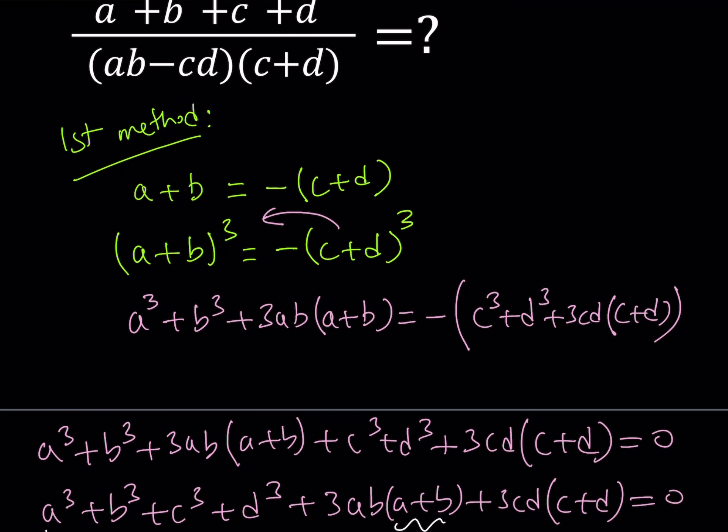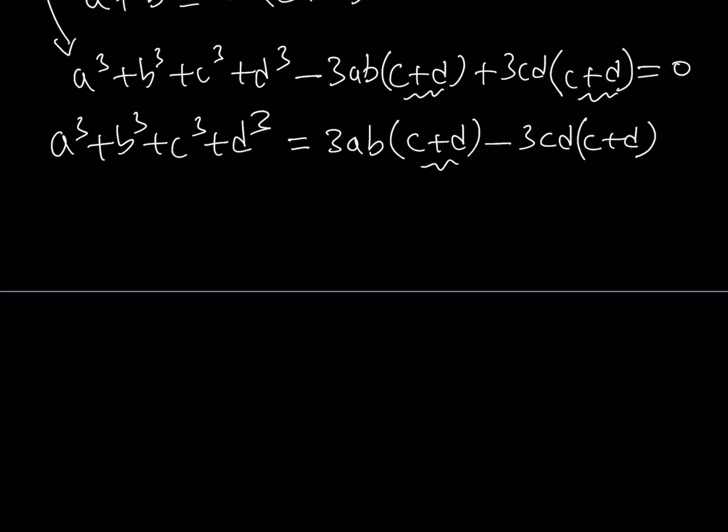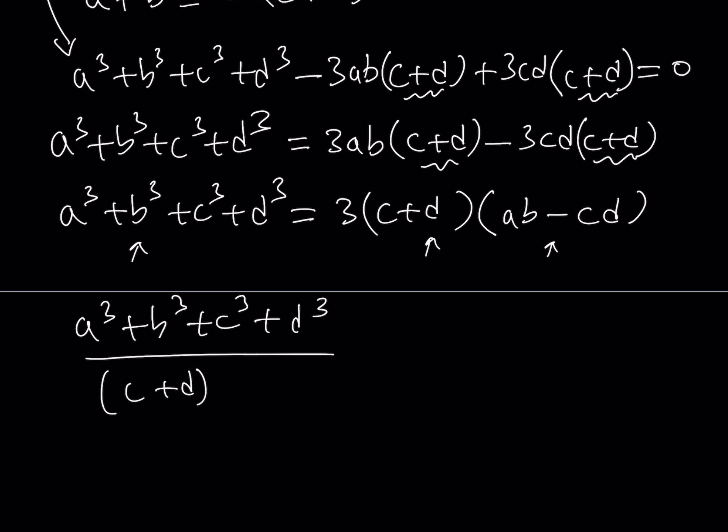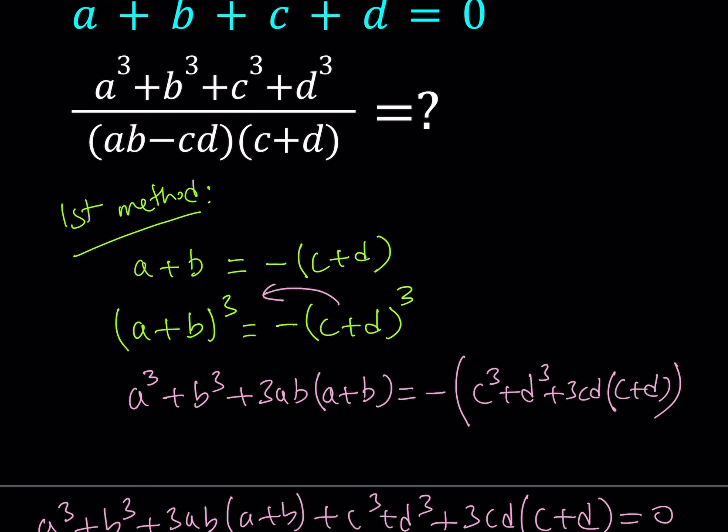Remember, our end goal is to simplify this expression. We have the sum of the cubes and then we do need that product. I can write this as 3 times C plus D multiplied by AB minus CD. This is really cool. Our expression involves this in the numerator and this times this in the denominator. Therefore, it makes sense if we divide both sides by the product C plus D times AB minus CD. And that is going to give us 3 because 3 is going to be the only thing that's left on the right-hand side. Our goal was to evaluate this expression. And we did. And the answer is equal to 3.